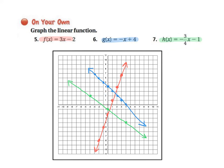And for number 7, it's the green graph. Y-intercept of 0, negative 1. And the slope is negative 3 over 4. All right, that's all for today's lesson. Thank you so much for watching.